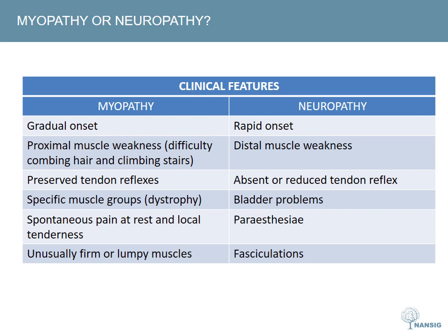Spontaneous muscle pain at rest and local tenderness may indicate an inflammatory myopathy. Firm or lumpy muscles could indicate pseudo-hypertrophic muscular dystrophies such as Duchenne muscular dystrophy. It's important to always look for evidence of systemic disease, as these are more likely in myopathy. Neuropathy, on the other hand, is much more likely to present alongside symptoms such as bladder and sensory problems.